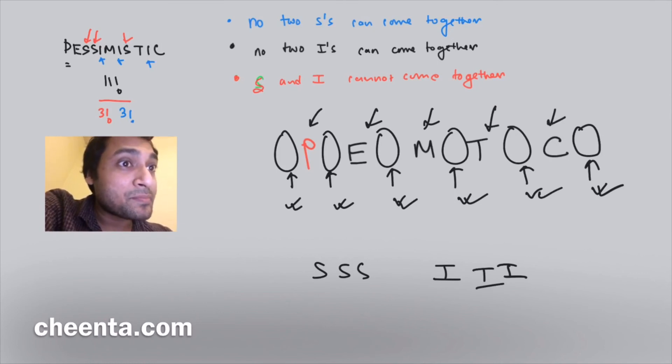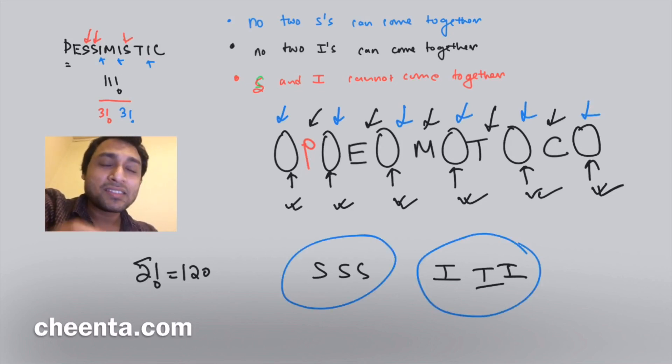You have to separately permute the letters P, E, M, T, C - five letters. So the way you can permute them is 5 factorial, so 5 factorial is 120. And you have these remaining six slots and these six letters, so how would you go about it?